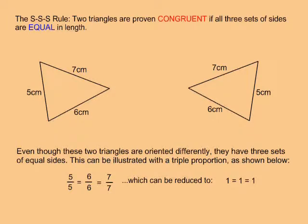The SSS rule states that two triangles are proven congruent if all three sets of sides are equal in length. Even though these two triangles are oriented differently, they have three sets of equal sides, and this can be illustrated with a triple proportion.